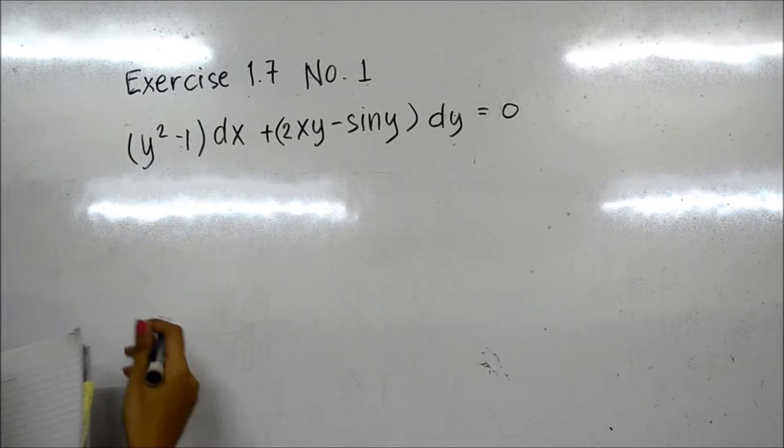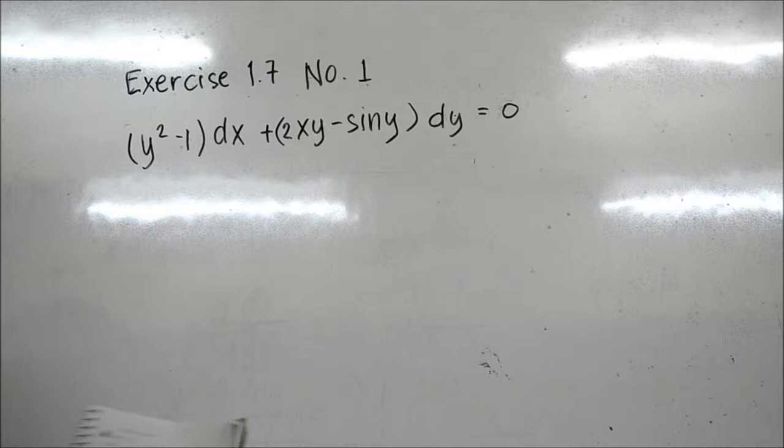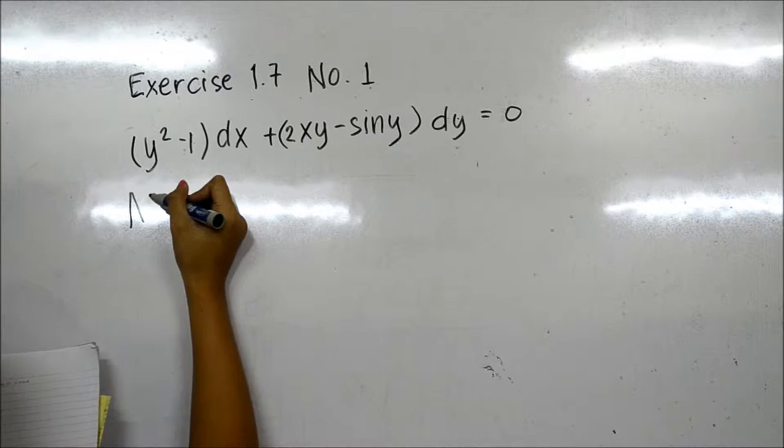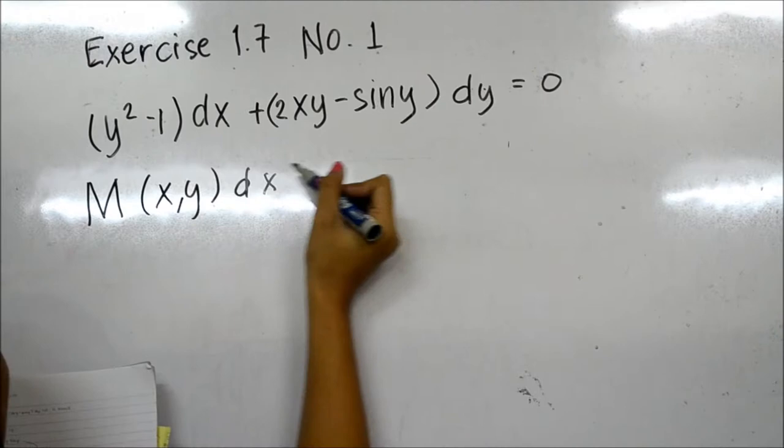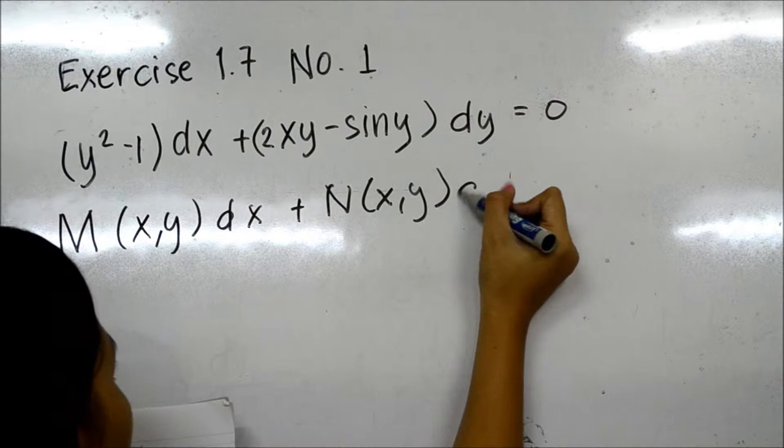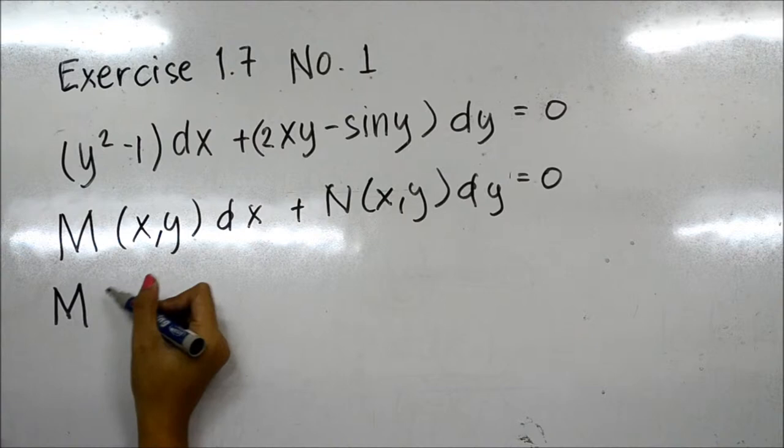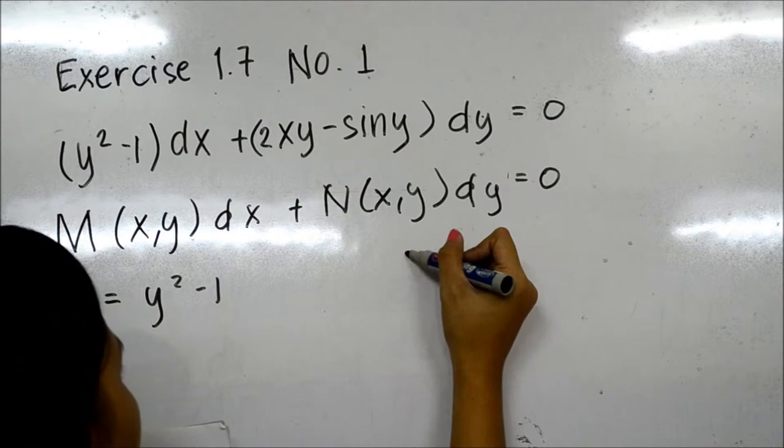We are given the equation (y² - 1)dx + (2xy - sin y)dy. The first step is to prove that this equation is exact. An exact equation has the form M dx + N dy, so we can identify M as y² - 1 and N as 2xy - sin y.